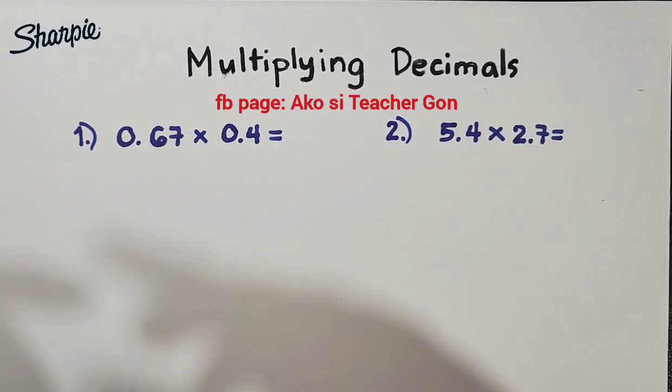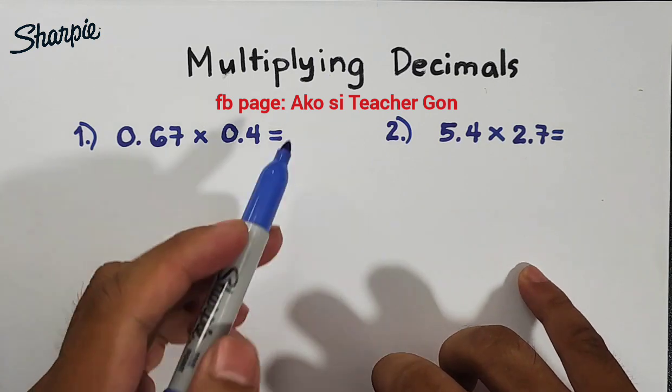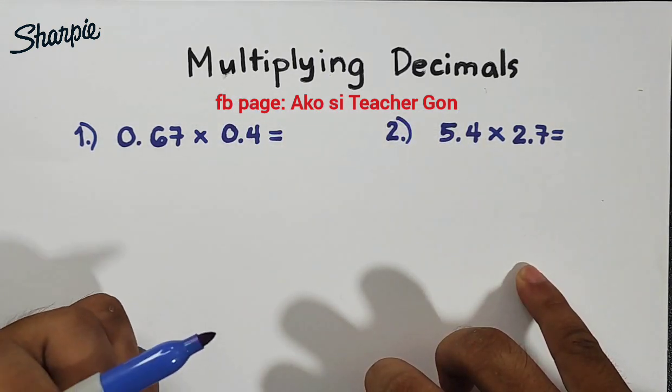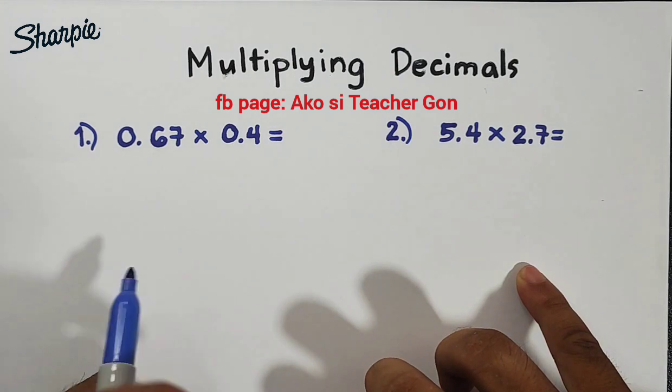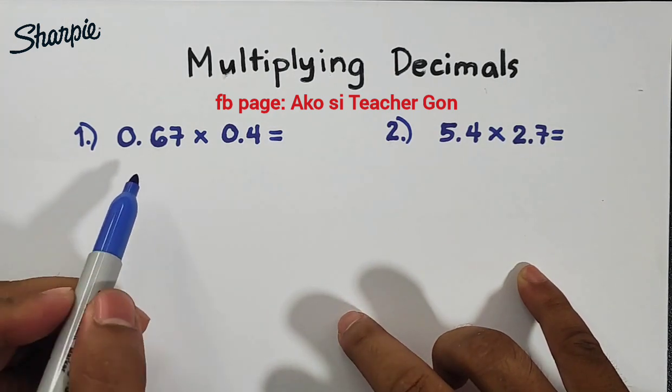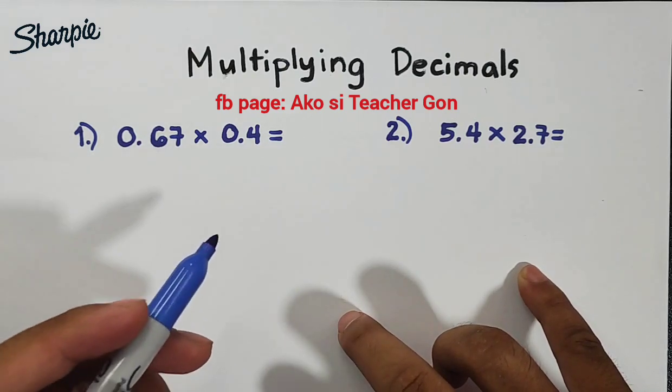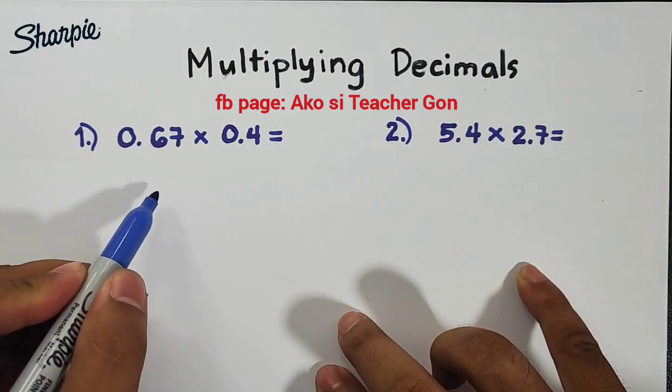Hi guys, it's me Teacher Gon. In today's video we will talk about multiplying decimals. So without further ado, let's do this topic. We have your item number one: 0.67 times 0.4. We will start with this first.